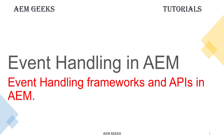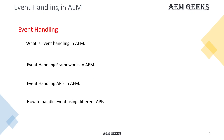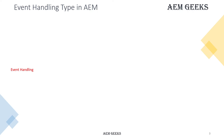This tutorial is about event handling in AEM. I'll talk about the different APIs and frameworks available to handle events in AEM. This tutorial is important for a basic understanding of event handling in AEM as well as for interview questions. Broadly, you can categorize event handling APIs into two different categories: JCR-based event handling and resource-based event handling.